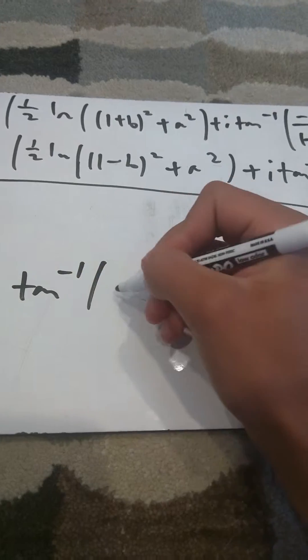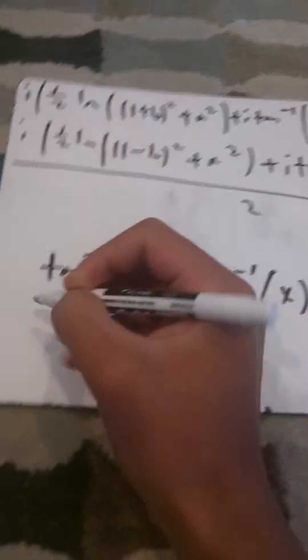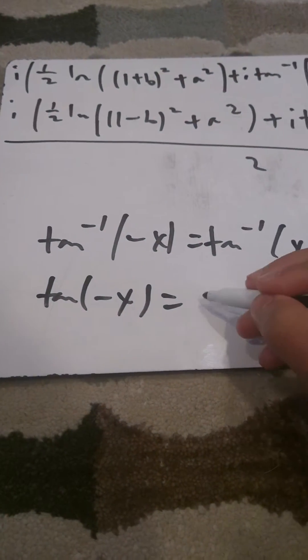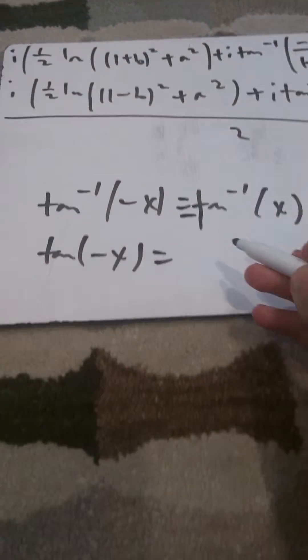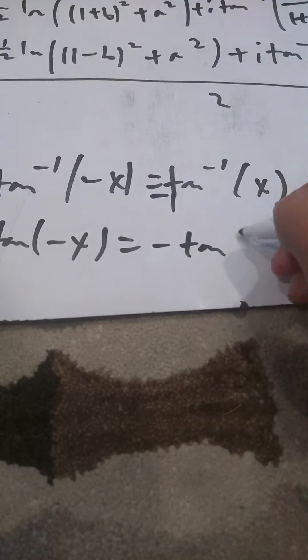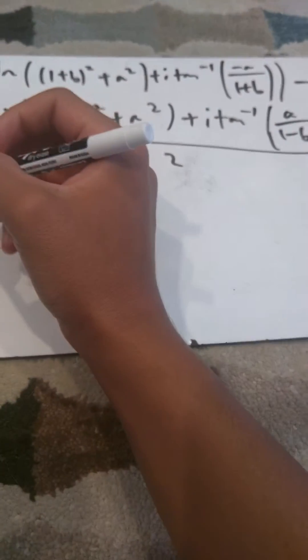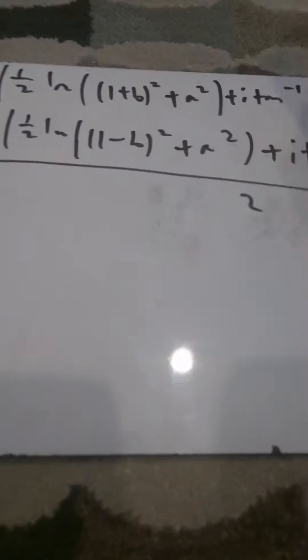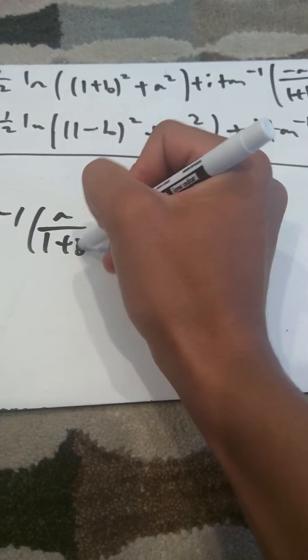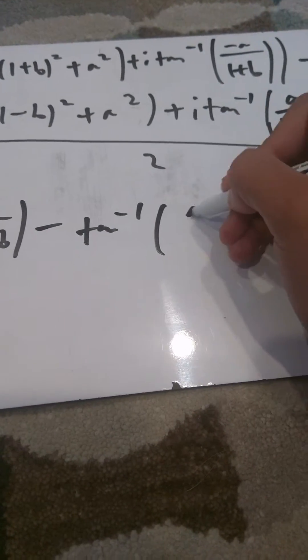This equals — arctangent of a negative number: arctangent of negative x equals negative arctangent of x, just like tangent of negative x equals negative tangent of x. So we can change this a bit. We have i and i giving a negative, and then there's a negative a over here, so that makes it positive. So arctangent becomes positive a over (1 plus b). And over here, we have i and i, so this becomes minus arctangent of a over (1 minus b).